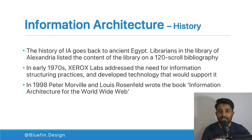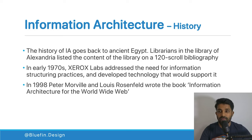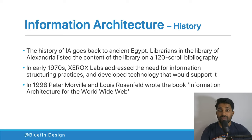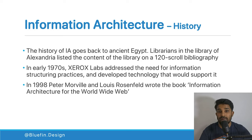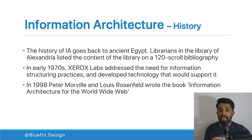Let's talk about the history of IA. It actually goes back to ancient Egypt, where the librarians of Alexandria listed the content of the library in a scrollable bibliography — maintaining the information architecture of what's included within the library. In the early 1970s, Xerox Labs addressed the need for structuring information and developed supporting technology. But IA really came about in 1998 when Peter Morville and Louis Rosenfeld wrote the book 'Information Architecture for the World Wide Web.'